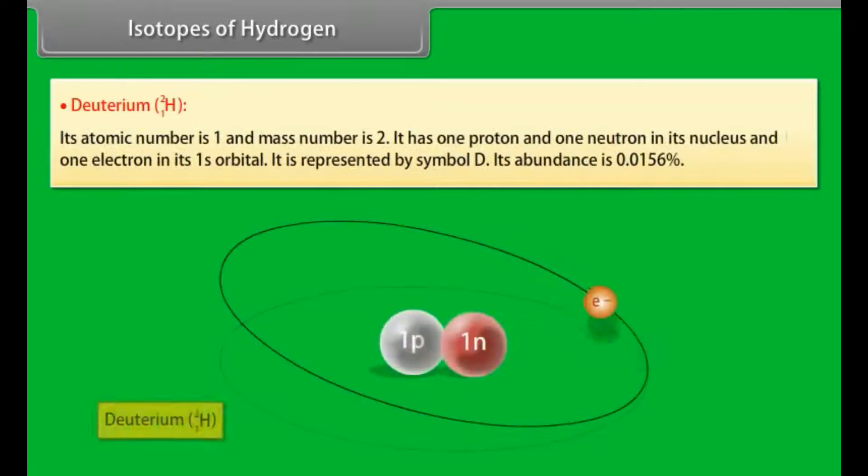Deuterium: Its atomic number is 1 and mass number is 2. It has 1 proton and 1 neutron in its nucleus and 1 electron in its 1s orbital. It is represented by symbol D. Its abundance is 0.0156%.